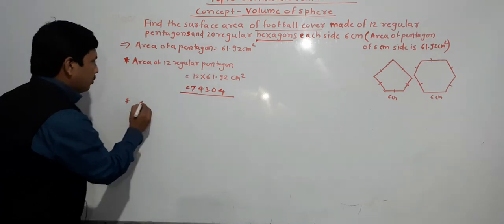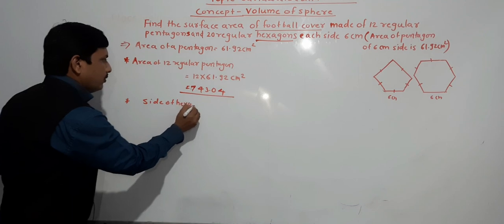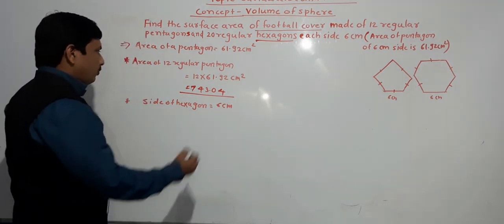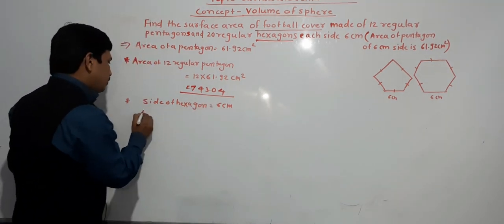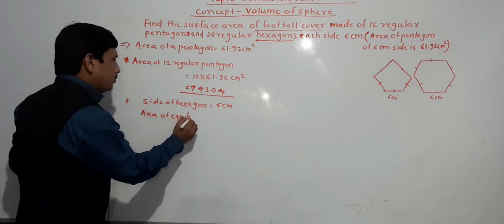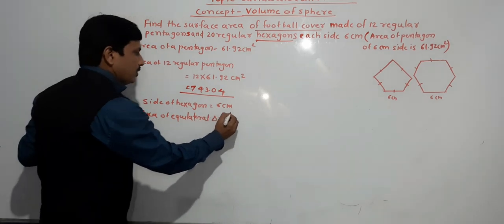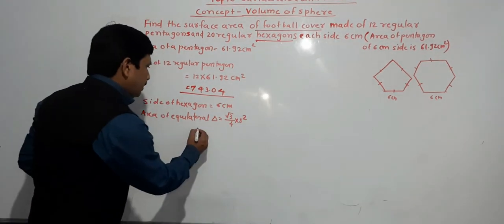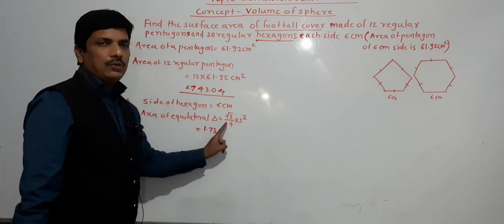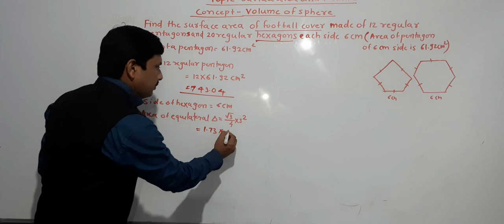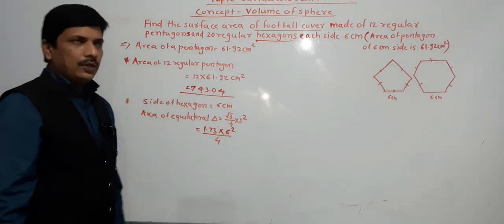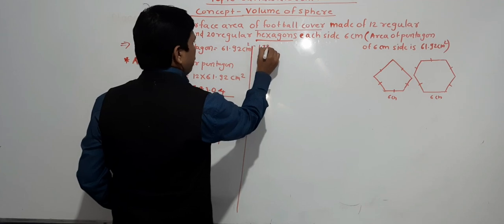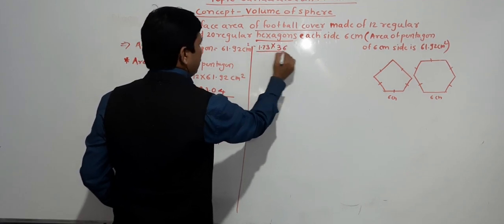Side of hexagon is 6 cm. Area of equilateral triangle equals root 3 by 4 into side square. The value of root 3 is 1.73. So: 1.73 multiplied by 6 squared (which is 36), divided by 4. That gives 62.28 divided by 4. Calculating: 4 into 62.28 gives 15.57 cm square. This is the area of one equilateral triangle.